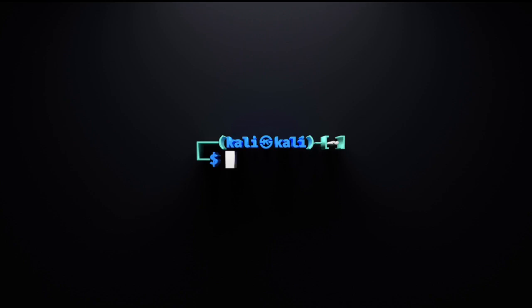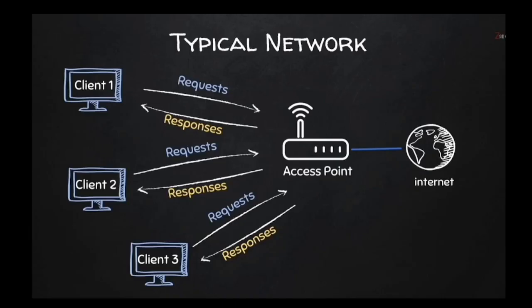Before we begin, I'm going to show you how a network works and how data is transmitted over the internet. This is a typical network — consider yourself as a client on this network. You have three clients, which can be any devices including a tablet, laptop, or smartphone. Once these three devices are connected to an access point or router, this router serves as an intermediary between the devices and the internet, transmitting requests and waiting for responses.